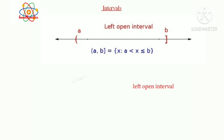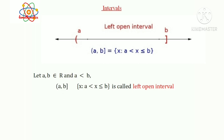It is a left open interval. Let a, b ∈ R and a < b. Then the set {x such that a < x ≤ b} is called a left open interval. Left open means right closed, hence we can also say right closed interval. It is denoted by (a, b]. So (a, b] = {x such that a < x ≤ b}. Example: {x such that x ∈ R and -2 < x ≤ 5} = interval (-2, 5]. Here, -2 is excluded and 5 is included in the set.